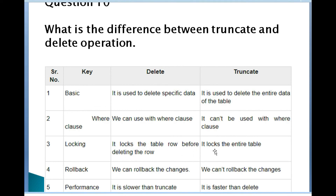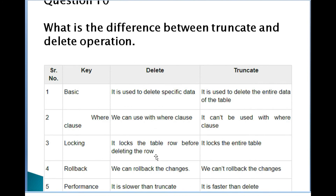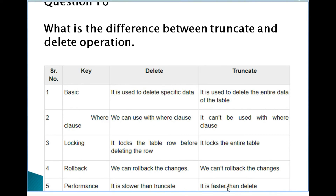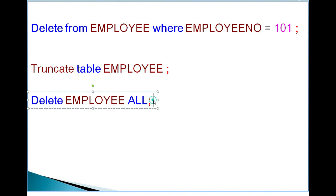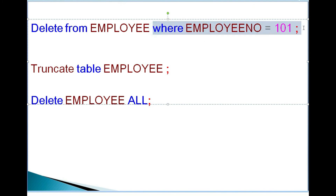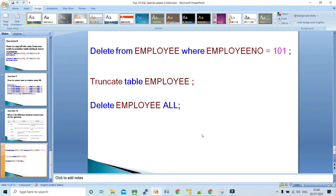TRUNCATE locks the entire table before deleting, while DELETE locks only the affected rows. With DELETE you can roll back changes, but once a table is truncated you cannot roll back. DELETE is slower than TRUNCATE. In Teradata specifically, there is no TRUNCATE statement — instead you use DELETE tablename ALL to remove all data, or add a WHERE clause to delete specific rows.